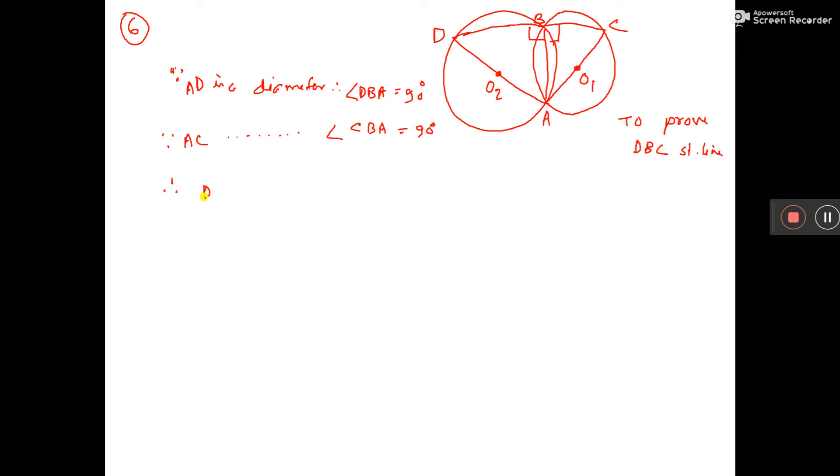Therefore, angle DBA is equal to angle CBA, which is equal to 90 degrees. But they are adjacent angles.